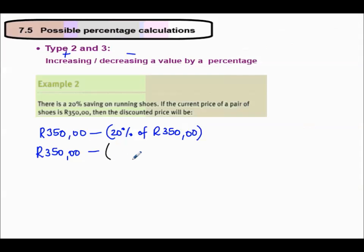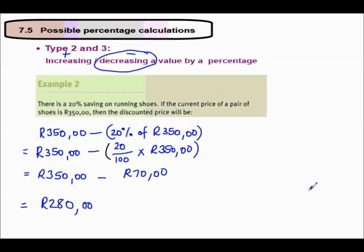So 350 rand minus 20% out of 100 multiplied by 350. When I did that calculation, this gave me 70 rand. So 350 rand minus 70 rand will equal 280 rand. That was an example of decreasing a value by percentage.